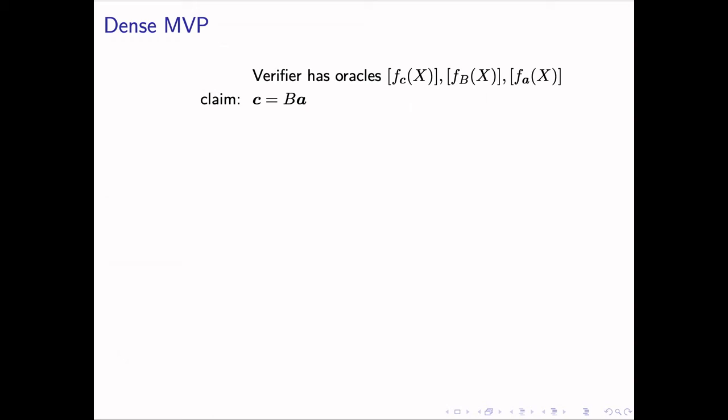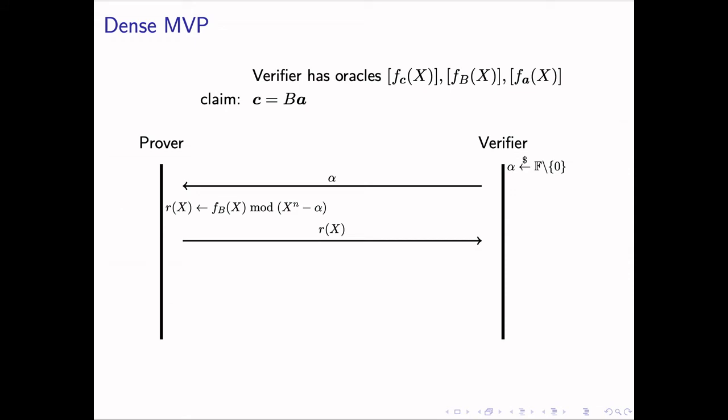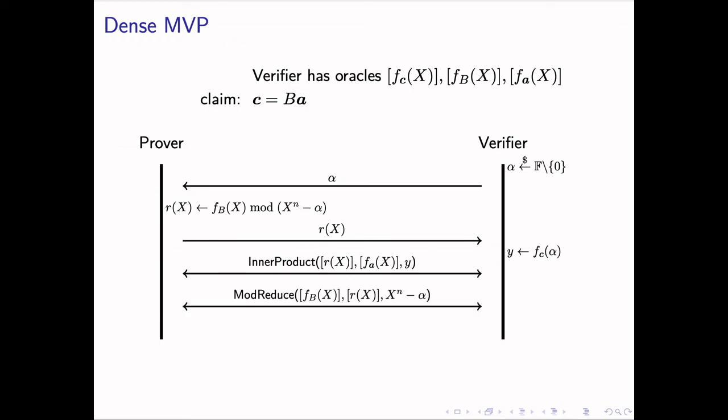Now, we formalize this observation into the following protocol. Assume the verifier has polynomial oracles F_C, F_B, and F_A. To prove that C equals B*A, the verifier samples a random alpha as discussed before. The prover then sends the remainder polynomial R(x) to the verifier. The verifier first ensures that the inner product of R and A is F_C(alpha) by the inner product protocol which we just introduced. Then the verifier checks that R(x) is correct by the mod-reduce protocol. In this protocol, the running time of the prover is at least linear to the total number of entries in the matrix. This is the case even if most of the entries are zero. This can be inefficient since, in practice, the matrix is often large and sparse.